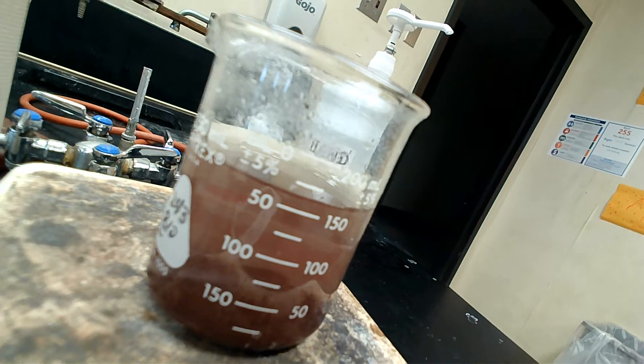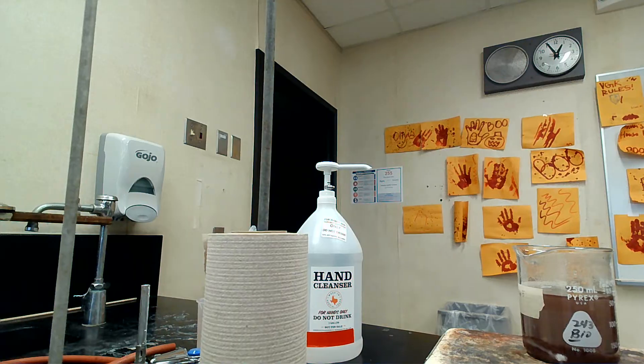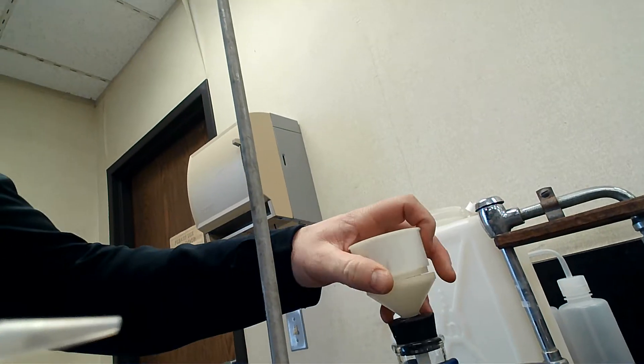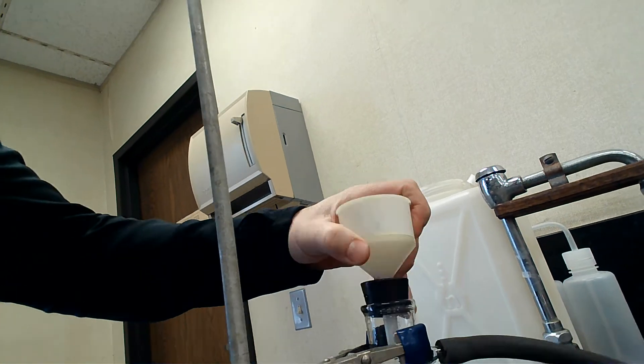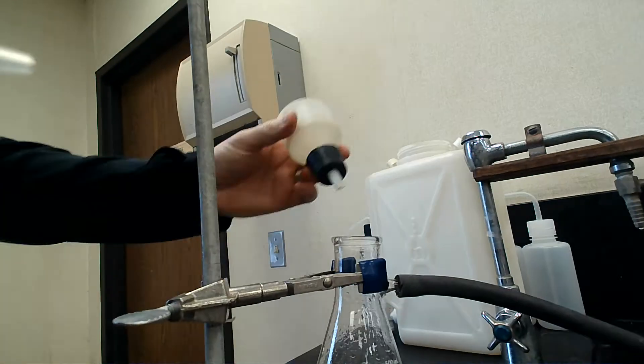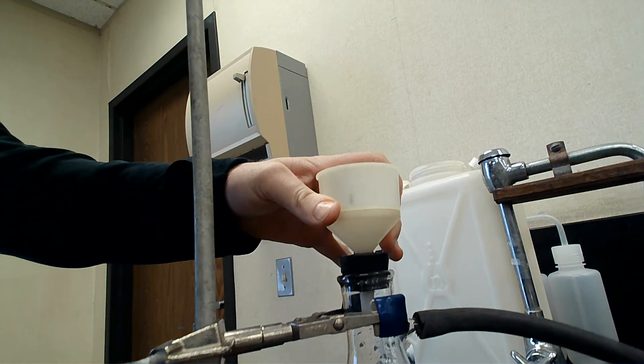We're going to go ahead and do our next step, which is vacuum filtration. Here's what we have: a Buchner funnel. Basically, it's a way to separate the solid from the liquid. We hook this up.